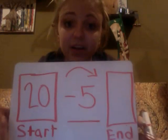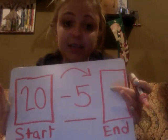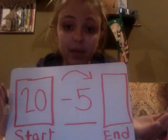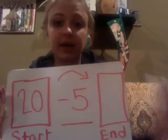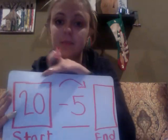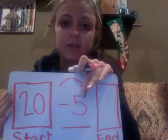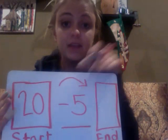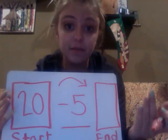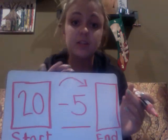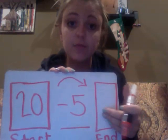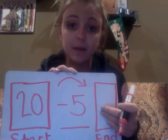Now we need to figure out what is the end — what does Lily end up with? We look at 20 minus five. Well, 20 minus five equals 15, so Lily ends up with 15 popsicles.